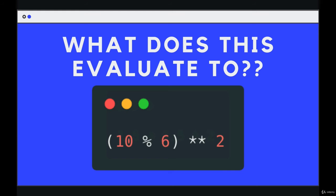10 mod 6 will happen first. That is the remainder operator. So how many times does 6 go into 10? It goes in once. So 10 minus 6 gives us a remainder of 4. So the remainder is 4 in those parens.